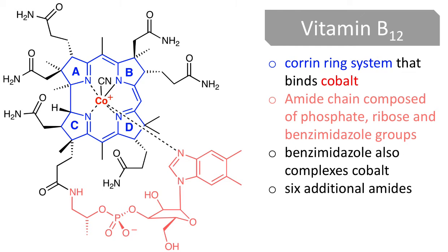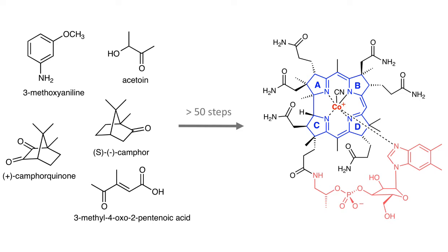Vitamin B12 has a corrin ring system — that's what you see in blue — and it binds cobalt, so we've got cobalt there in the middle. We've got this side chain in light pink, and we can see that it's composed of an amide functional group, a phosphate group, a ribose sugar, and a benzimidazole ring system. Flanking the corrin ring system are six amide functional groups. So where would we start? How would we even begin this? These are the actual starting materials for vitamin B12: 3-methoxyaniline, acetylene, camphor, camphorquinone — and you can buy all of these from a chemical supply house. But chemists didn't immediately know what to start with.